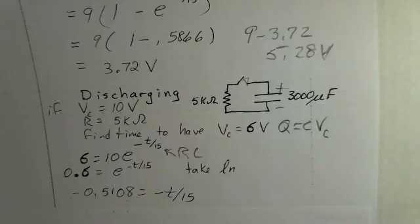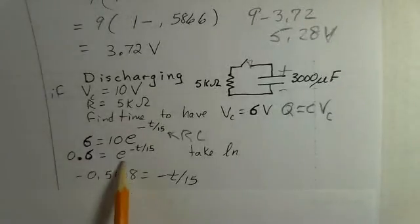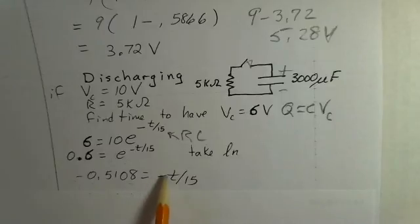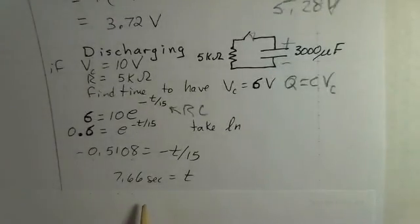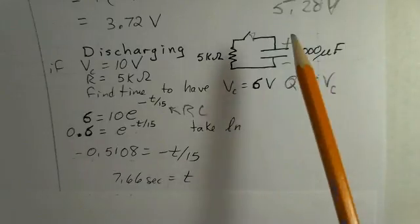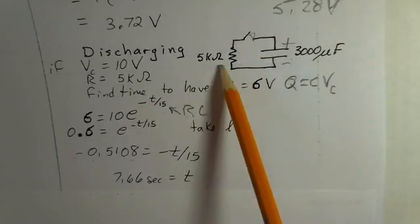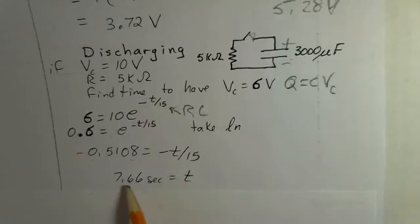And as you take the natural log of E to a power, they're inverse functions of each other. So the natural log of this exponential, the two effects, the two functions cancel, and we just have the argument minus T over 15 remaining. So we have a minus sign here, a minus sign here. They cancel. We want T. We multiply both sides by 15, and I get 7.66 seconds would be the approximate time for starting from 10 volts on this capacitor, closing the switch, using a 5 kiloohm resistor in the circuit. 7.66 seconds would be the time to get down to 6 volts.